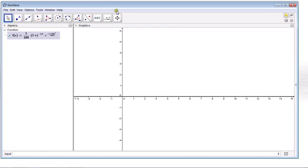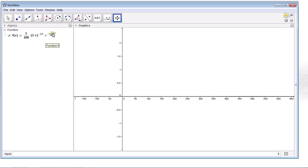GeoGebra graphs this for us, which in and of itself is something that's helpful, but notice that we can't see what's going on because our view is off. In this case, we're given the hint that mu was 500, so this bell curve is shaped such that the center of the curve is at 500.